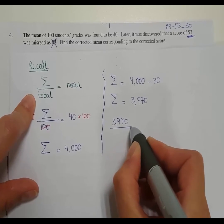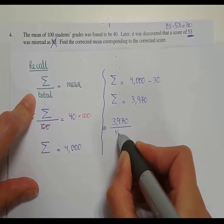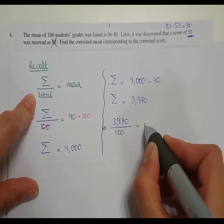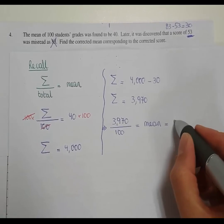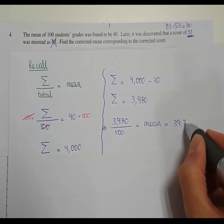Divide by the total. The total was 100. And that will give us our actual mean, our corrected mean. So 39.70.